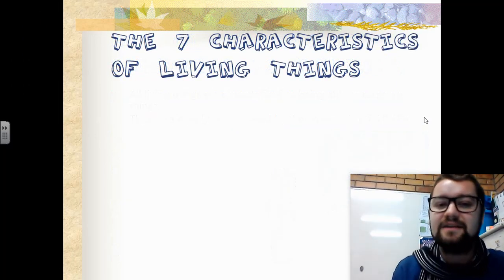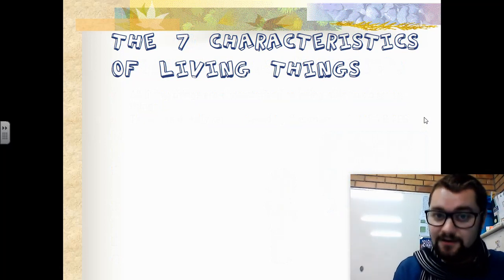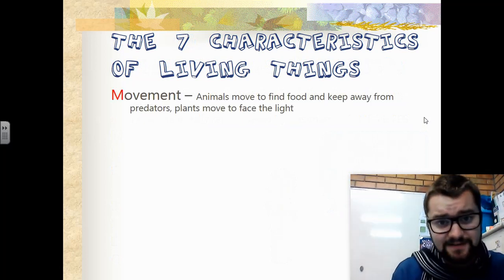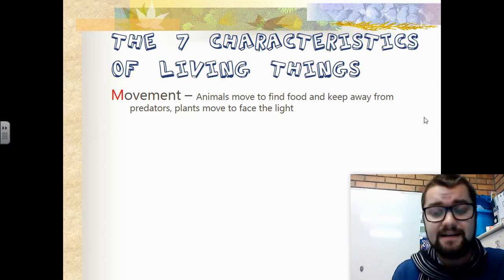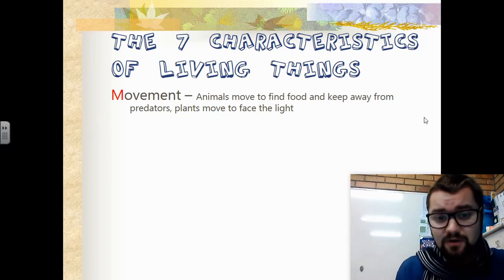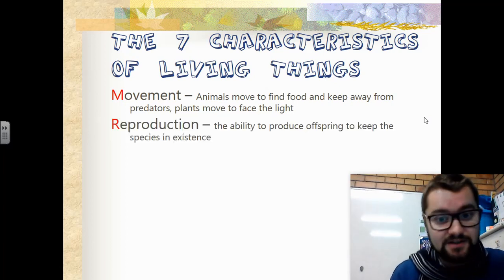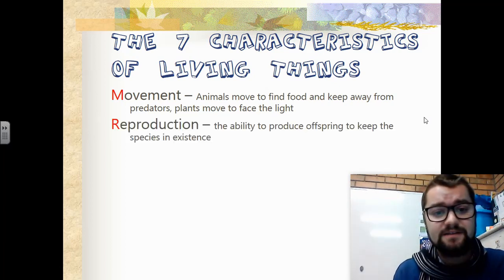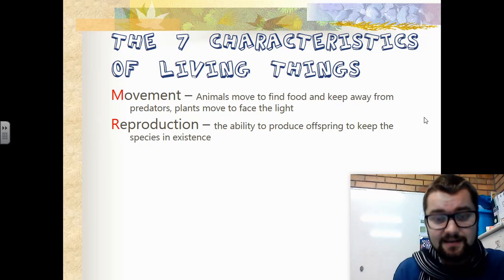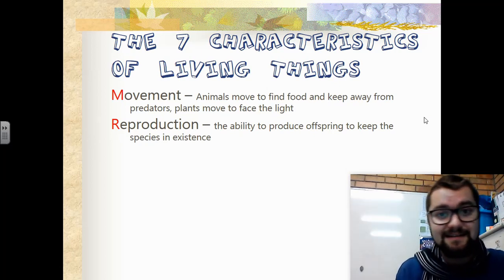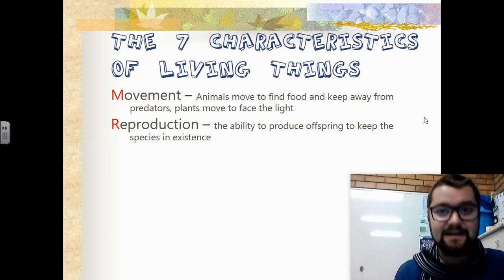The seven characteristics of living things. The first one we're going to speak about is movement. Animals move to find food and keep away from predators, as well as plants move to face the light. The next one is R, which is reproduction — the ability to produce offspring to keep species in existence. Think about cats and dogs: they have puppies and kittens, and those puppies and kittens can then have offspring of their own when they're older.